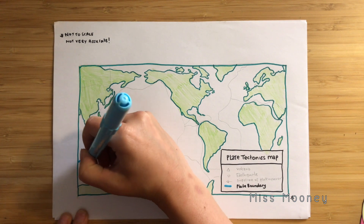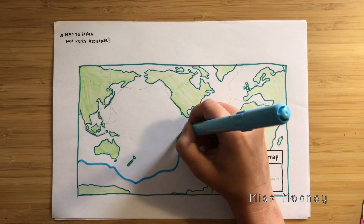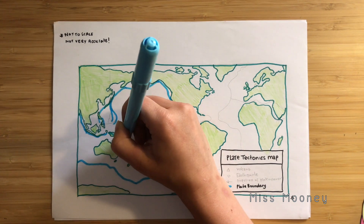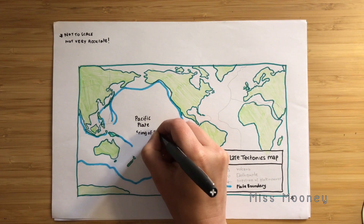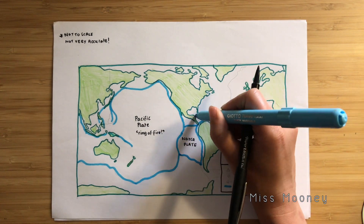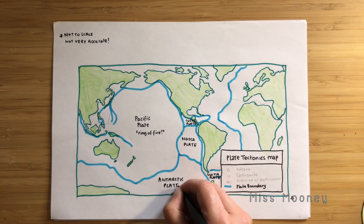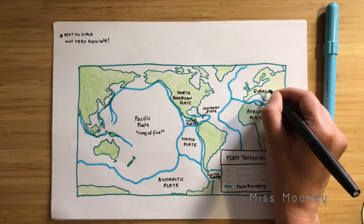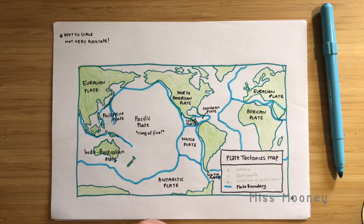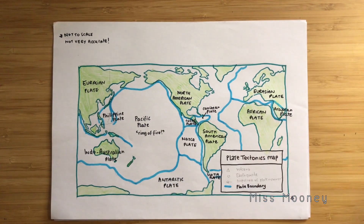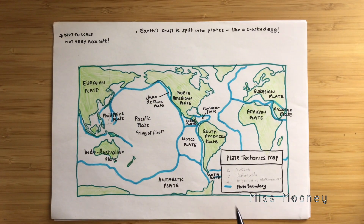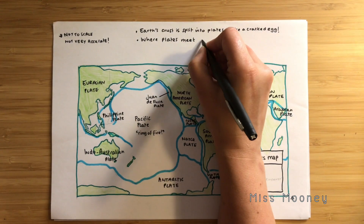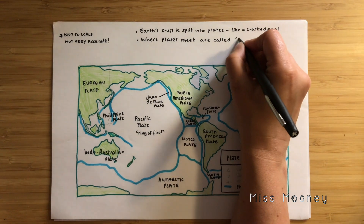The Pacific plate is the biggest plate in the world, and around the edge of this is called the Ring of Fire — we'll look at this later on. There are a few smaller plates too and you'll see me add these on. The blue line demonstrates where the plates are meeting, and we call these plate margins or plate boundaries, so you might hear either term.